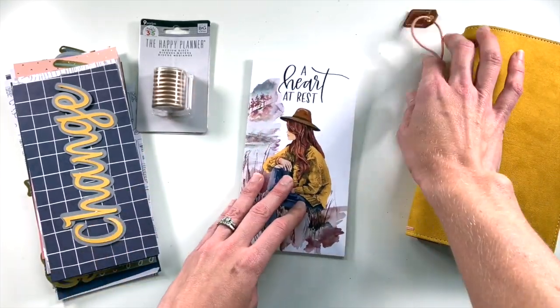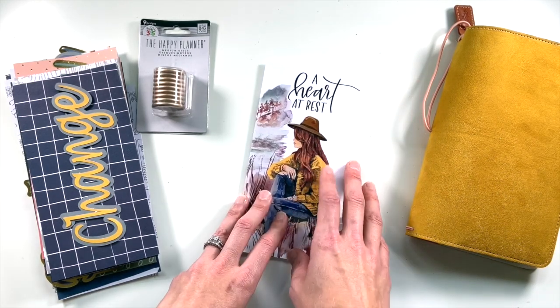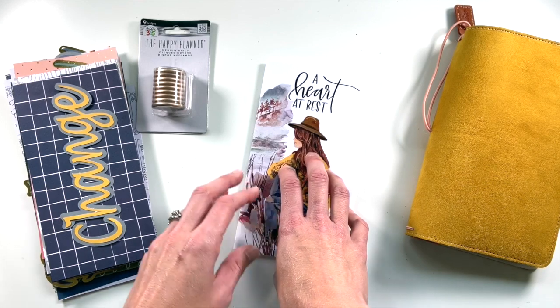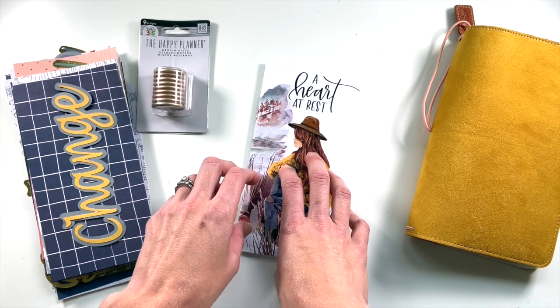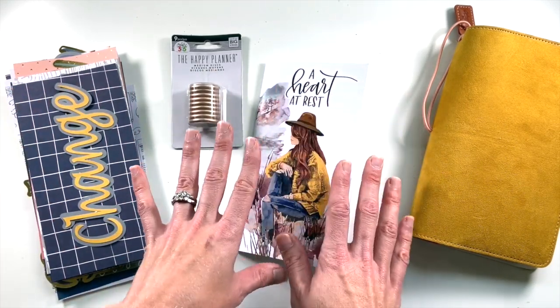This month I wanted to change it up just a little bit, so I am going to take my devotional A Heart at Rest and deconstruct it and make it into a disc bound devotional. In order to do that, I'm gonna have to cut it apart.